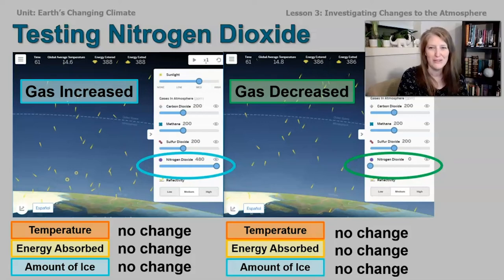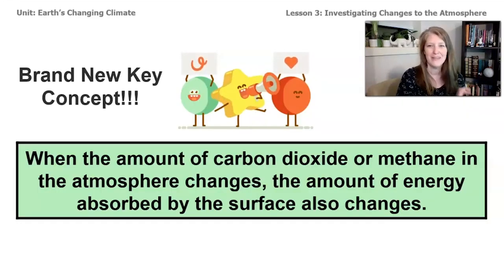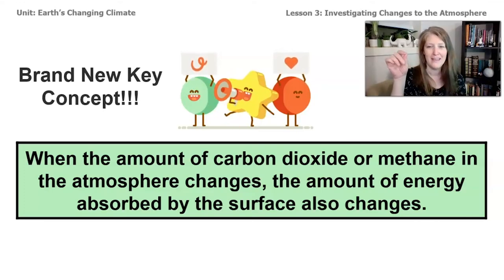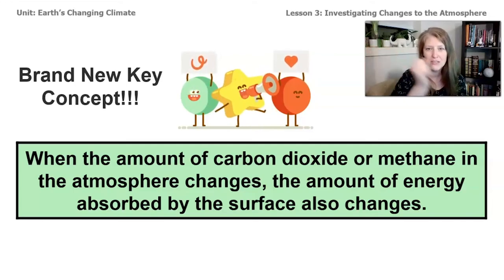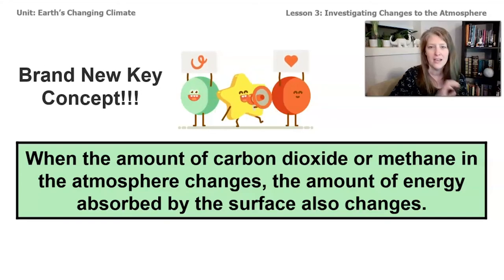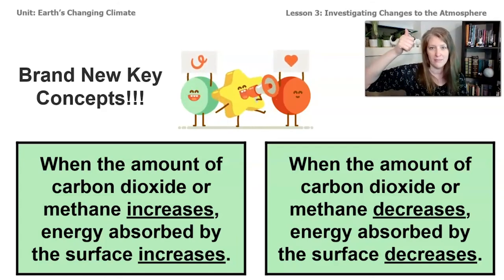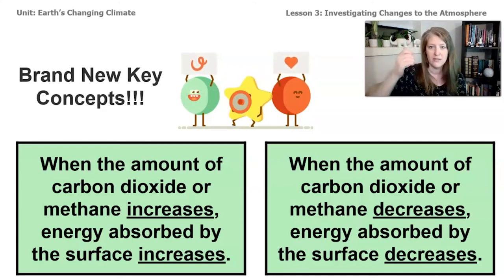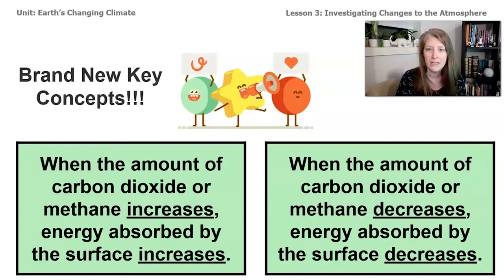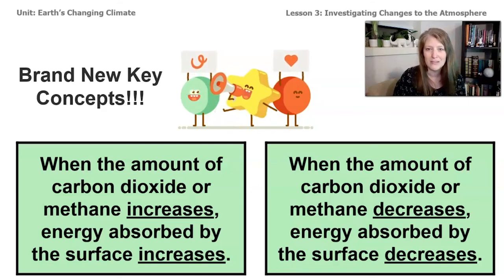This data is all so interesting — we've learned a lot in this lesson. We have discovered a brand new key concept: when the amount of carbon dioxide and/or methane in the atmosphere changes, the amount of energy absorbed by the surface also changes. Specifically, when you increase carbon dioxide or methane gas, the energy absorbed and the temperature also increase. And when the amount of carbon dioxide or methane decreases, the amount of energy absorbed on the surface also goes down.